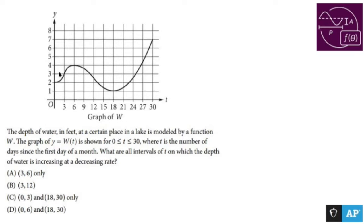The graph of y equals W of t is shown for t is between 0 and 30, where t is the number of days since the first day of a month.